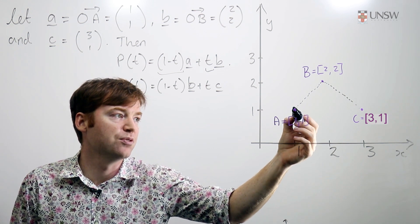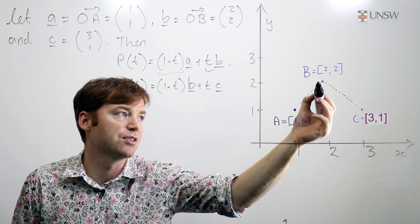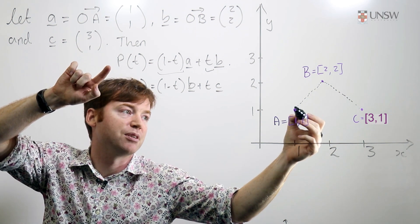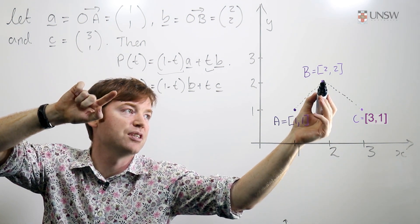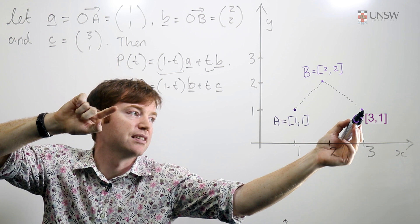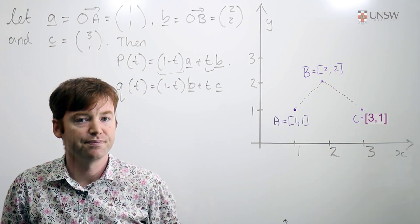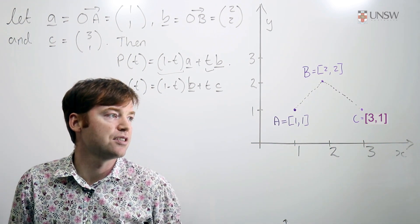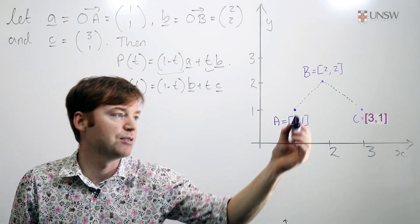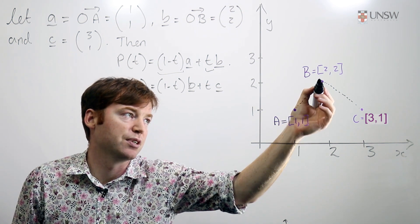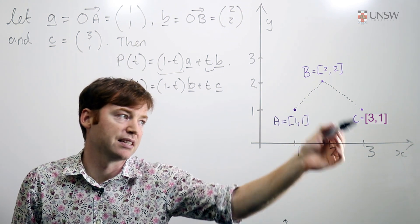As time goes uniformly from 0 to 1 then the point goes uniformly from, first of all here we're describing a point from a to b, and here we're describing a point going uniformly from b to c using this equation. These are the first two parts of our equation and so far we've just described a point going along this line from a to b and b to c.